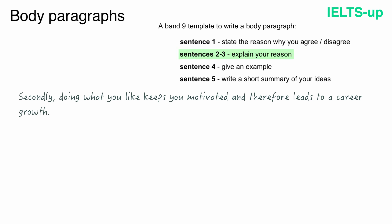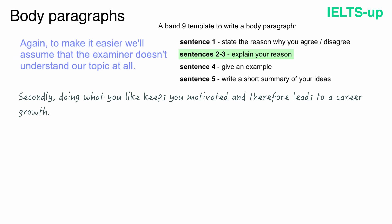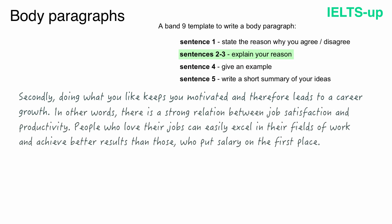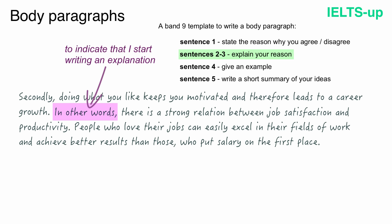Now we have to explain that reason in sentences two and three. To make it easier, we'll assume that the examiner does not understand our topic at all. Here are my sentences two and three: 'In other words, there is a strong relation between job satisfaction and productivity. People who love their jobs can easily excel in their fields of work and achieve better results than those who put salary in the first place.' Look at how I used the phrase 'in other words' to indicate that I start writing an explanation — it is a very nice technique.